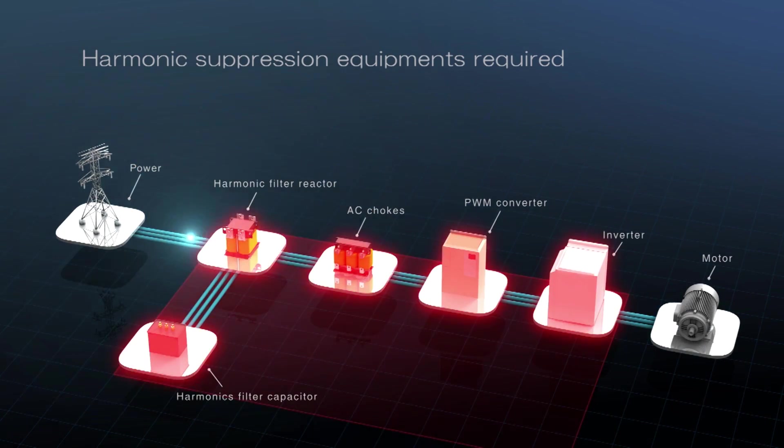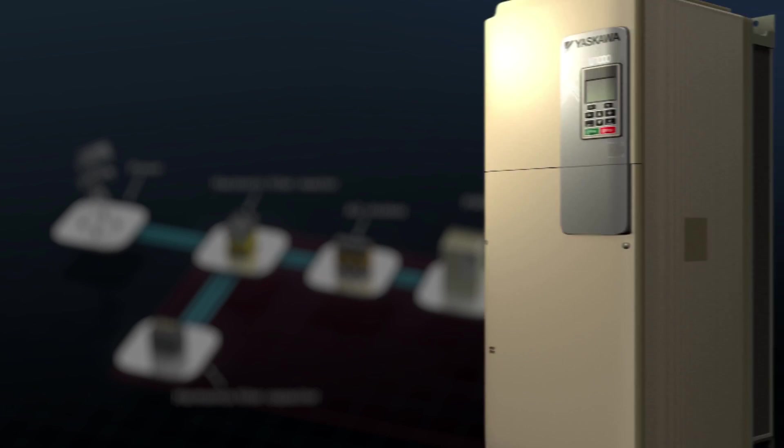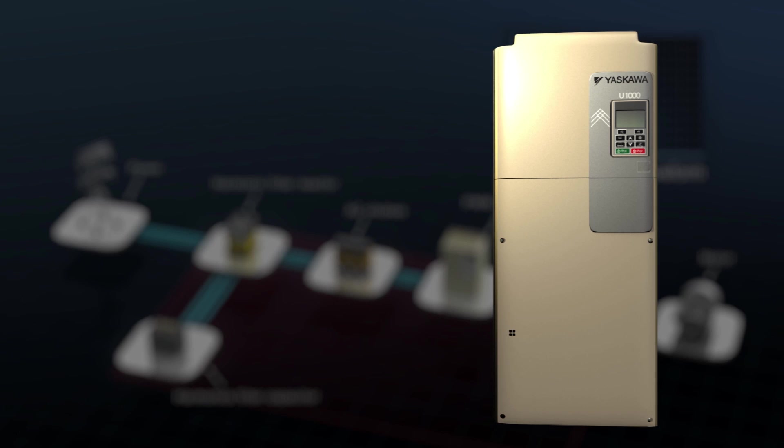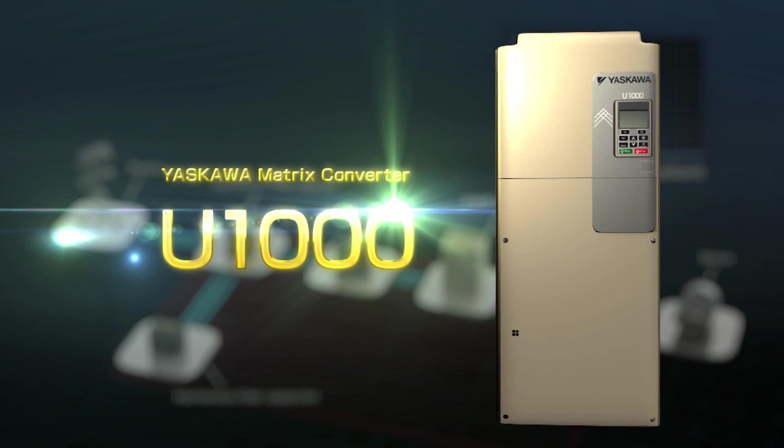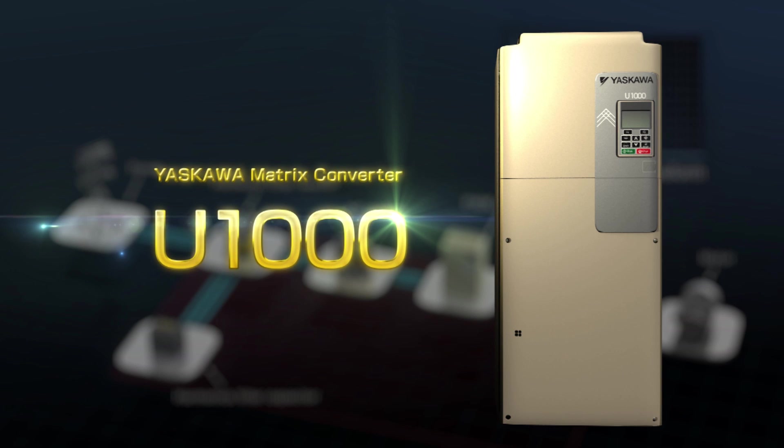Large space is required to install these external components. Yaskawa Electric provides the solution. The Yaskawa Matrix converter U-1000 uses revolutionary new technology offered in a single compact component to solve this space problem.